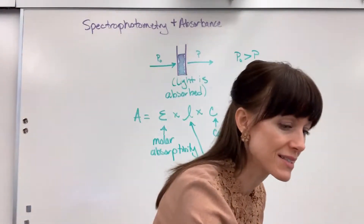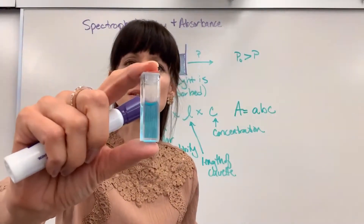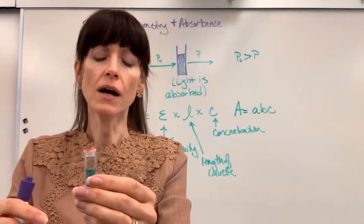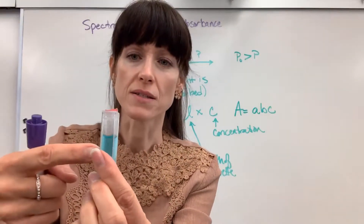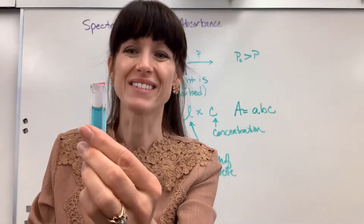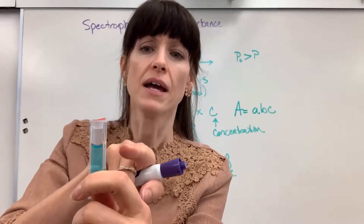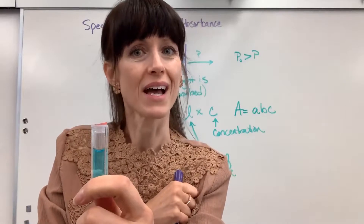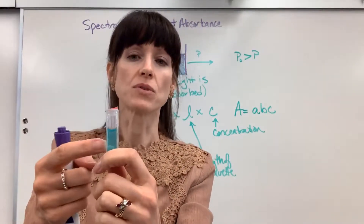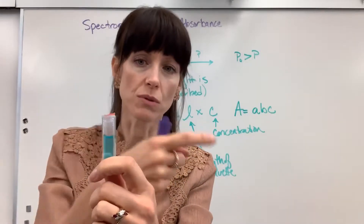Here is an example. Here is a cuvette, and inside of it is a solution. We would shoot light through it because there is copper sulfate inside. That copper sulfate is going to absorb some of the light, and less light will come out on the other side. So we will know the absorbance — the amount of light absorbed as we shoot light through it.